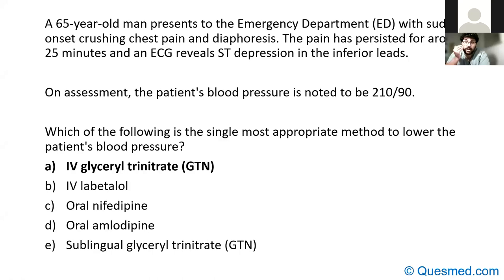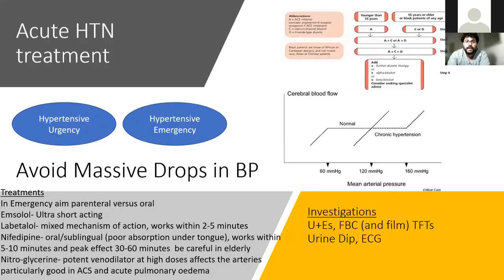Because this patient has chest pain with ST depressions, this is a hypertensive emergency — because there is systemic end-organ damage. The key point is that acute treatment of hypertension is very different from chronic treatment.